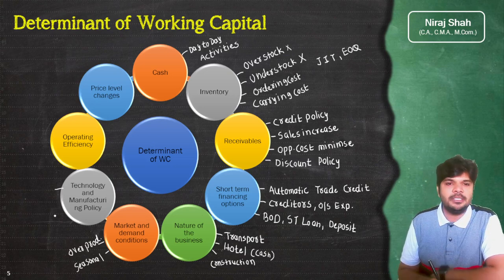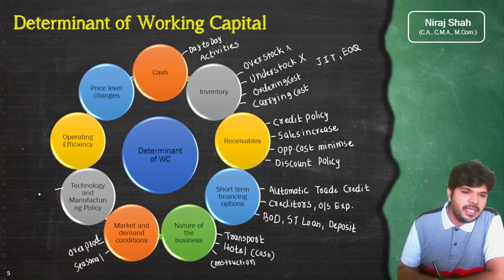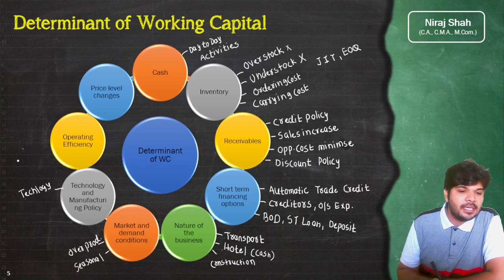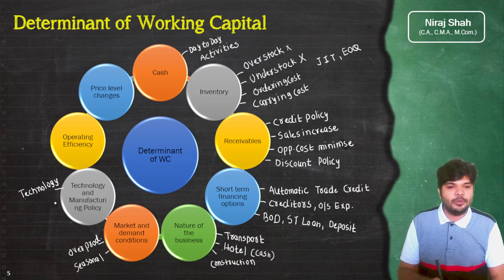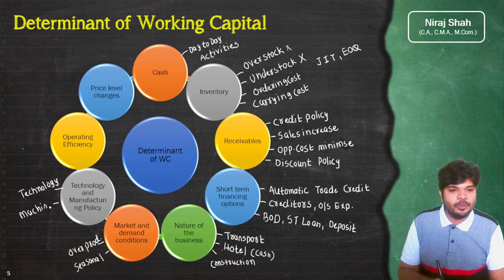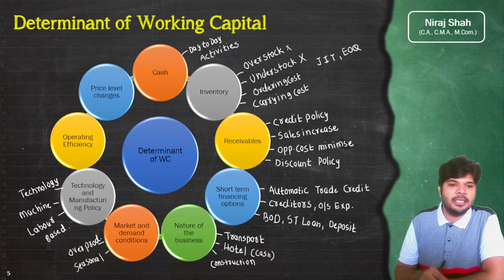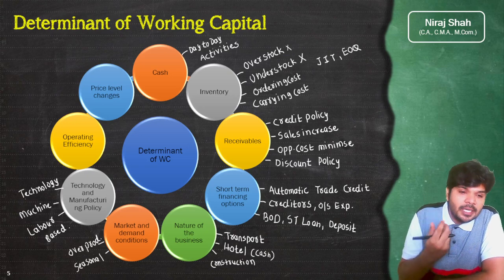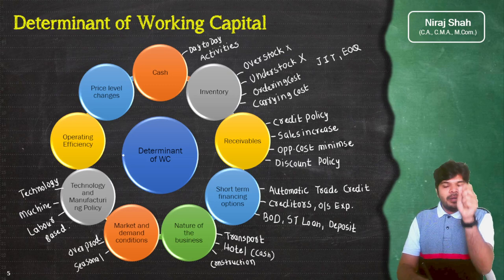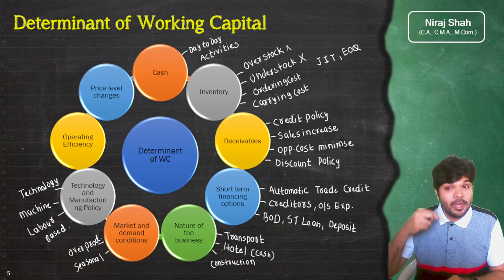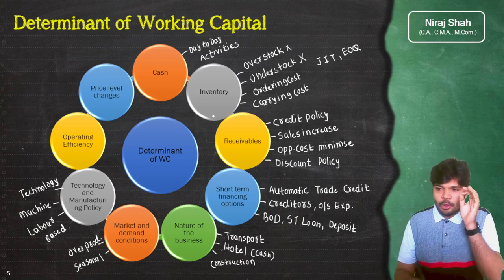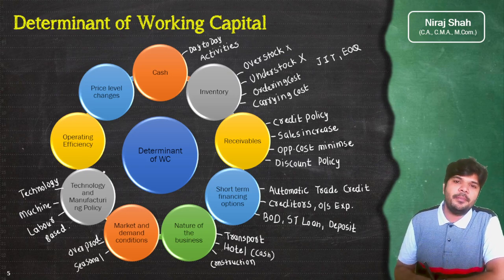Technology and manufacturing policy भी important है — कुछ business machine based होते हैं और कुछ labor based। Machine based business में एक बार fixed investment कर दो machine में, फिर वो machine कम working capital में भी production कर पाएगी। लेकिन labor intensive businesses में laborers को wages चुकाने के लिए ज्यादा working capital की जरूरत पड़ सकती है। आप business में कौन सी technology का use करते हो उससे भी working capital requirement का पता चलता है।